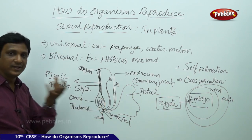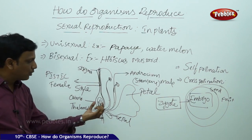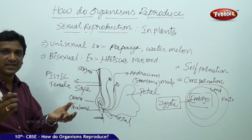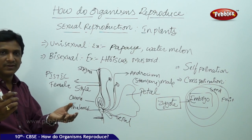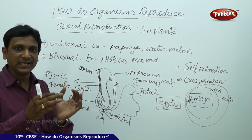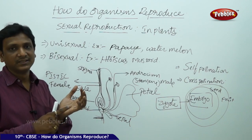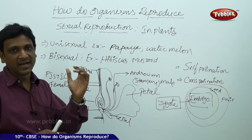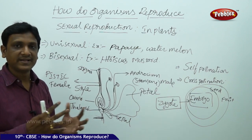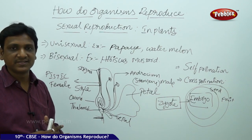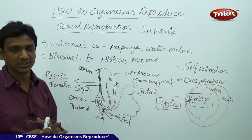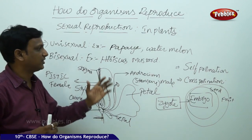Once the seed is planted, the embryo starts growing into a new plant by using materials present inside the seed — this is called germination. After fertilization, the ovule turns to a seed and the ovary turns to a fruit. The ovary of the flower becomes the fruit you eat, and the ovules become the seeds you throw away. The embryo inside the seed is the baby plant. This is how sexual reproduction takes place in plants.